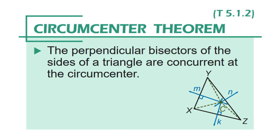Since this is geometry, we can't make bold statements without a property or theorem to back them up, and we do have such a theorem. It's called the circumcenter theorem, found on page 207. Here's what it says: the perpendicular bisectors of the sides of a triangle are concurrent at the circumcenter. Notice that the circumcenter is equidistant from its vertices — in this diagram, point C is equally distant from X, Y, and Z.